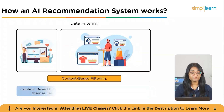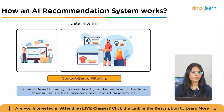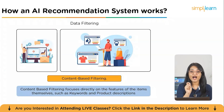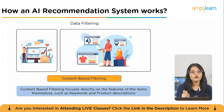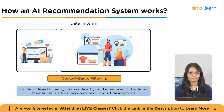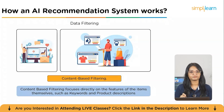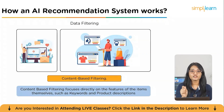Next is content-based filtering. Unlike collaborative filtering, this method doesn't compare you to other users. Instead, it focuses directly on the features of the items themselves — looking at attributes such as keywords, product descriptions, and characteristics — and recommends items with similar features to ones you've already shown interest in. This method works especially well when item data is rich and detailed, giving the system more to analyze.